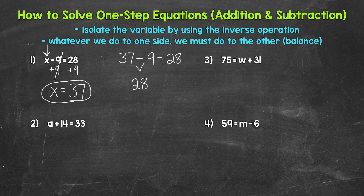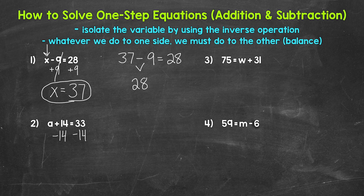Let's move on to number 2, where we have a plus 14 equals 33. So what plus 14 equals 33? What's the inverse operation — what's the opposite of addition? Well, subtraction. So let's subtract 14 from the left side of the equation. Whatever we do to one side, we must do to the other. So let's subtract 14 from the right side as well. On the left side of the equation, we are adding 14 and subtracting 14, so these 14s cancel each other out.